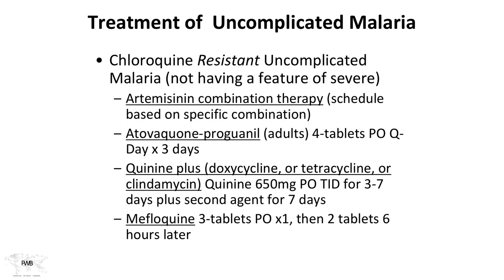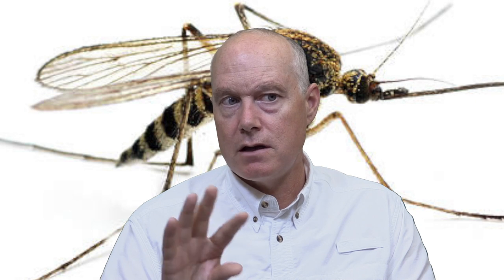For chloroquine-resistant areas — most of the world outside that small sensitive region — artemisinin combination therapies are the preferred approach, providing the most effective and quickest parasite clearance. Other options include atovaquone-proguanil, quinine plus a second agent such as doxycycline, tetracycline, or clindamycin, and mefloquine. If a patient was on prophylaxis, use a medicine different from what they were taking.